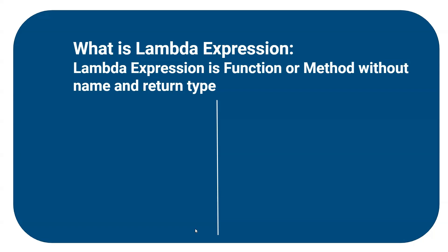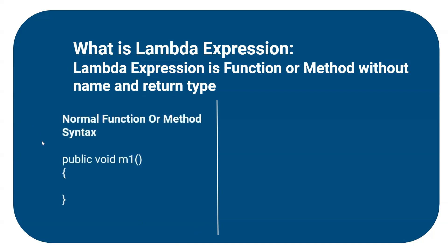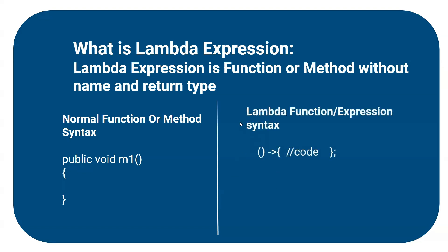Let's compare the lambda expression syntax and normal method syntax. In a normal method we have the access modifier, return type, method name, and then curly braces for the body implementation. A lambda expression has no return type and no name — it has one arrow indicating the lambda function body. The missing things compared to a normal method are the return type and the method name.